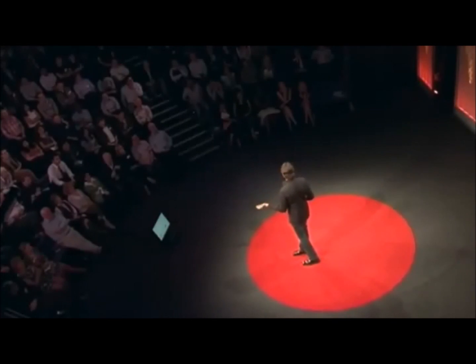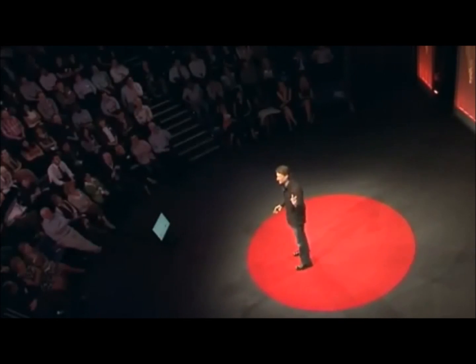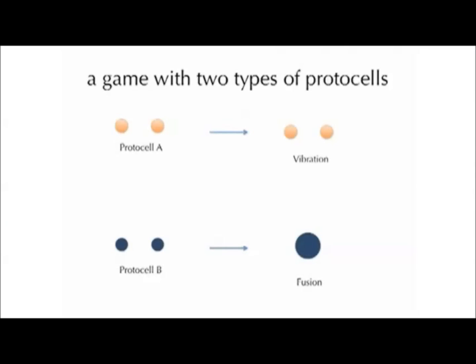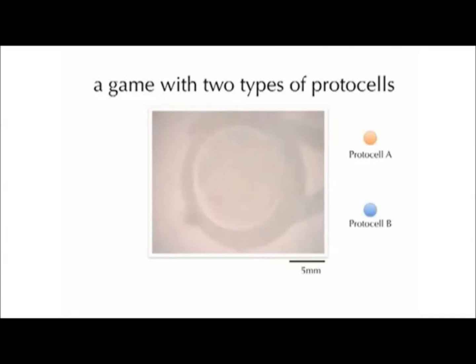Now we're going to play a game with these protocells. We make two different kinds: protocell A has a certain chemistry inside that when activated causes the protocell to vibrate around — just dancing. The second protocell B has a different chemistry inside, and when activated the protocells all come together and fuse into one big one. We put these two together in the same system, there's population A and population B, and then we activate the system.